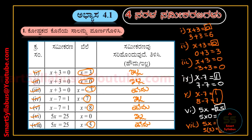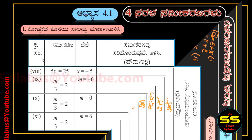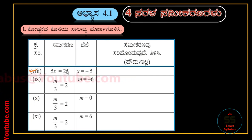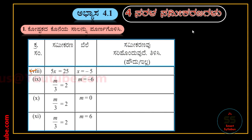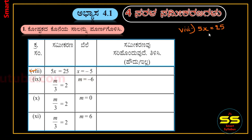This is 7. So, this is 4. This is 1. 5x equal to 25. Now, x is minus 5. We will write this. So, we will write it. 5x equal to 25. 5x equal to 25. We will write that.